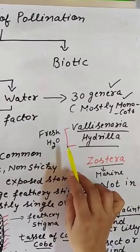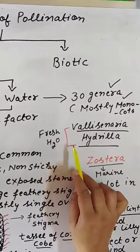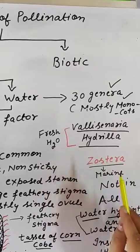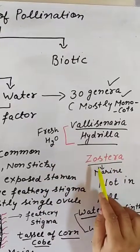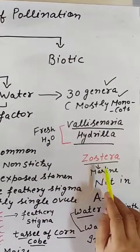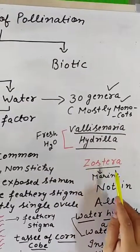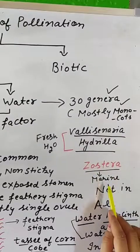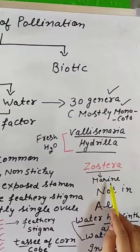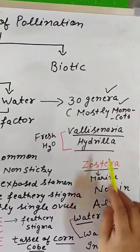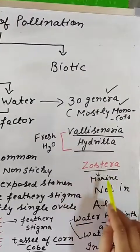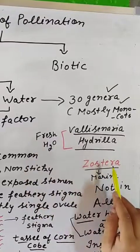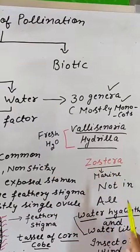Vallisneria and Hydrilla are mostly present in fresh water. Next is Zostera, also known as seagrass. It is marine-inhabited, and in these flowers water pollination takes place.